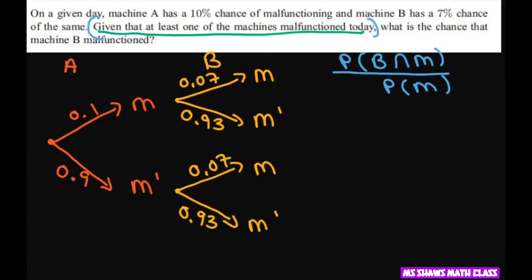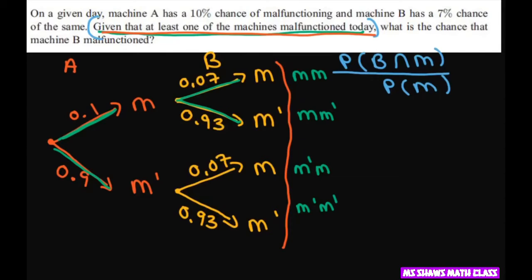Therefore, the first thing I want to do is look at given at least one of the machines malfunctions. If you write this out by tree, by branches, this is malfunction, malfunction, malfunction, not malfunction, malfunction, and not malfunction, not malfunction. So, at least one, the only one that doesn't malfunction is this one. So, let's look at that.